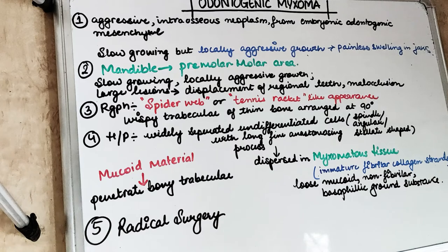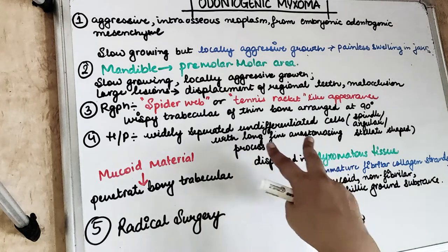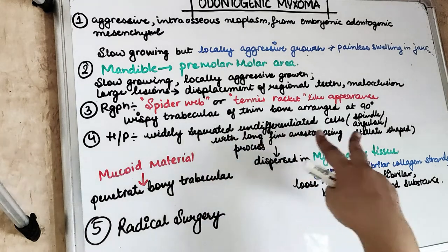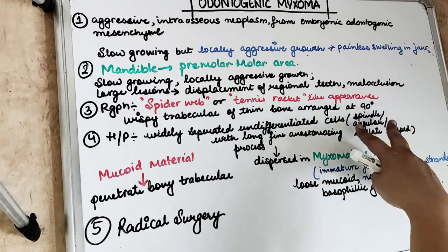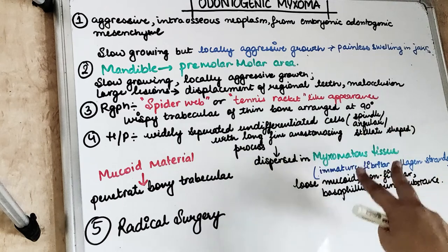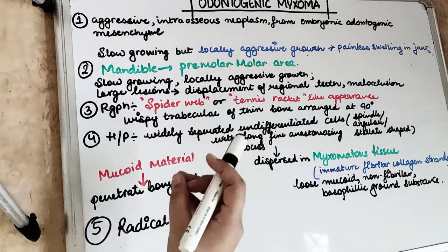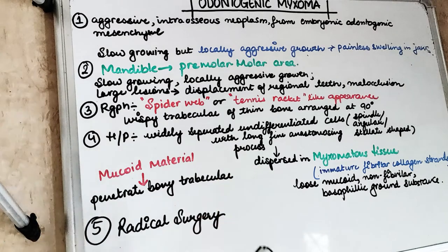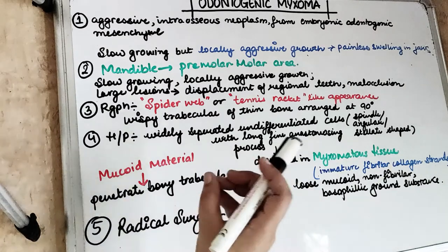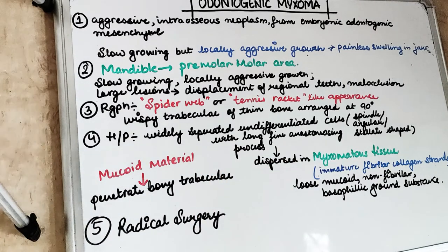The mesenchymal cells are undifferentiated cells that are spindle-shaped, angular, or stellate in shape. Clinically, this lesion is slow growing but locally aggressive, and there will be painless swelling in the jaw.